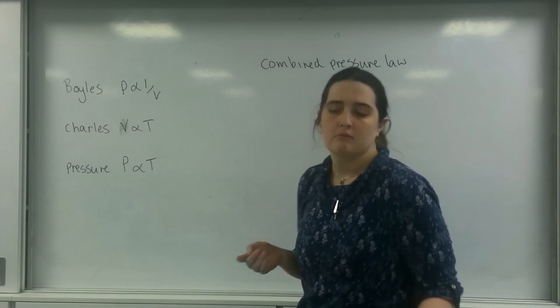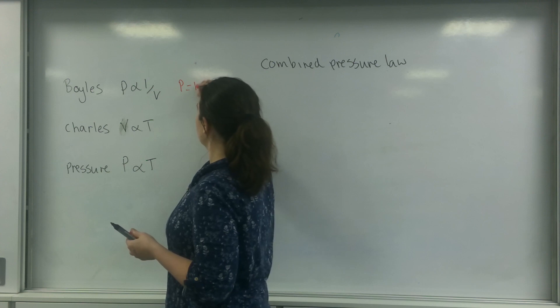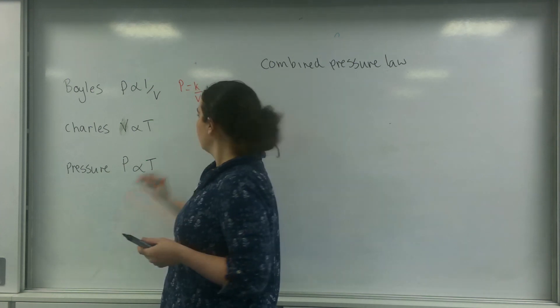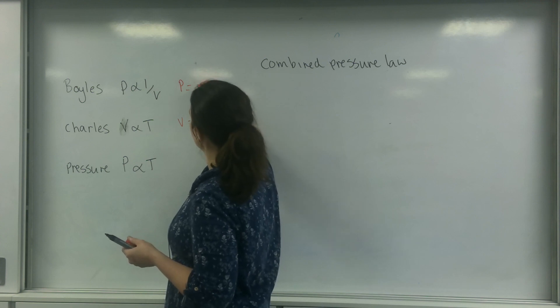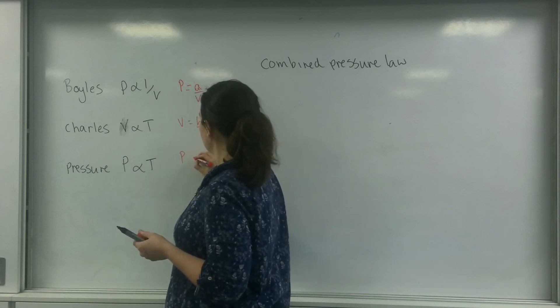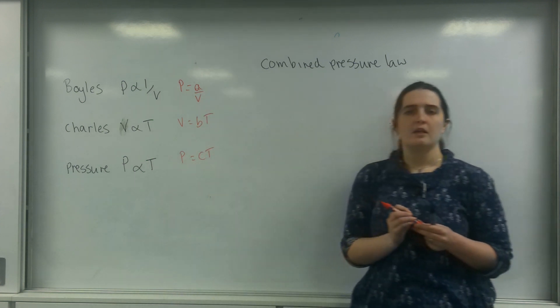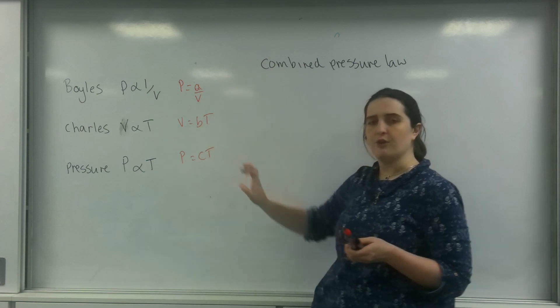I know that pressure equals a constant over volume. Volume is also a constant, so I'm going to call these different constants. I've got this as A, I'm going to call this B, and I know that pressure is C times T there. So this is the relationship for Boyle's, Charles's, and pressure law.